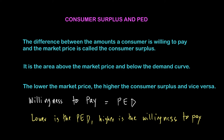The reason is simple: when elasticity of demand is low, there are not many substitutes available, and consumers will be willing to pay a higher price because they don't have substitutes to switch to if the price changes. Conversely, if a good is elastic in demand, it has many substitutes available, so consumers are willing to pay less, and as a result consumer surplus will be lower.